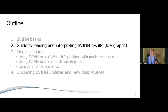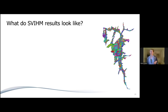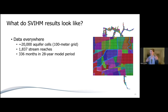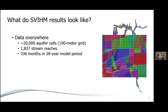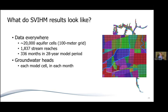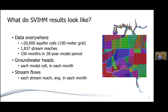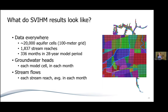Model results look like data everywhere. We have about 20,000 aquifer cells using a 100-meter grid to cover the space in Scott Valley, and in 1,800-plus of those grid cells there is a stream — those are called stream reaches, so we have 1,800 points along the stream network where we're simulating flow. There are also 336 months in our 28-year model period. Groundwater heads are estimated in each model cell each month, and stream flows are estimated in each stream reach averaged by month. You can look at results in space and time: groundwater heads in space give a contour map, and over time the heads in one well give a well hydrograph. For stream flows, you can look at connectivity maps in space or flow at one location over time in a river hydrograph.